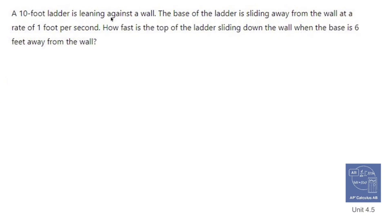A 10 foot ladder is leaning against a wall. The base of the ladder is sliding away from the wall at a rate of 1 foot per second. How fast is the top of the ladder sliding down the wall when the base is 6 feet away from the wall?